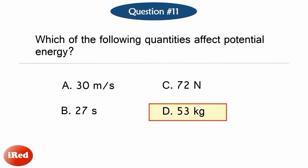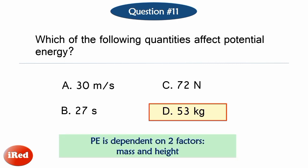The correct answer is Letter D. Potential energy is dependent on two factors, mass and height. Option A, 30 meters per second, is a measure of speed. Letter B, 27 seconds, is a measure of time. Option C, 72 newtons, is a measure of force. Whereas Option D, 53 kilograms, is a measure of mass. Thus, the answer is Letter D, mass.